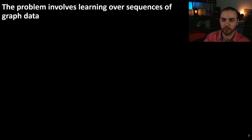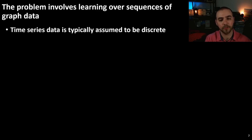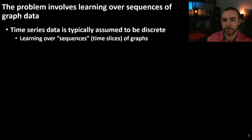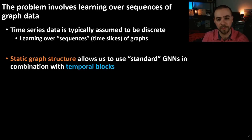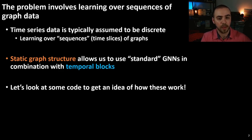Now that we've covered tools for time series forecasting, we'll look at combining them with graph neural network tools in order to learn over sequences of graph data and predict future values of graph data. Time series data is typically assumed to be discrete, so when we extend this to a graph domain, we'll be learning over time slices of graphs — the entire graph at time 1, time 2, etc. — and learning over that input sequence to predict some value in the future. Because we have a static graph structure, we can use a standard GNN and combine it with some type of temporal block — an LSTM, temporal convolution, or temporal attention.